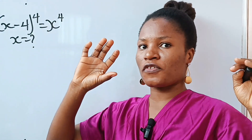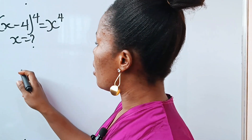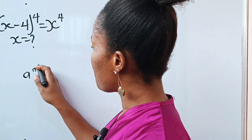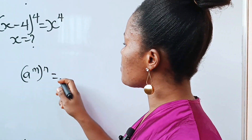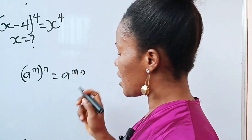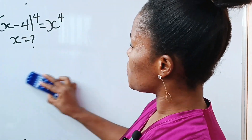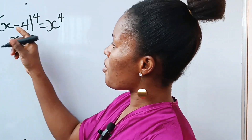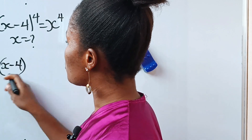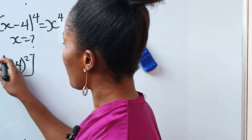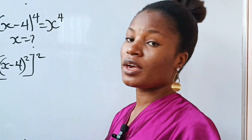Now we are going to first of all bring this down, simplify this. A to the power of m raised to the power of n is the same thing as a to the power of m times n. So that simply means that I can rewrite this bracket as x minus 4 to the power of 2, everything squared, because 2 times 2 will still give me 4.